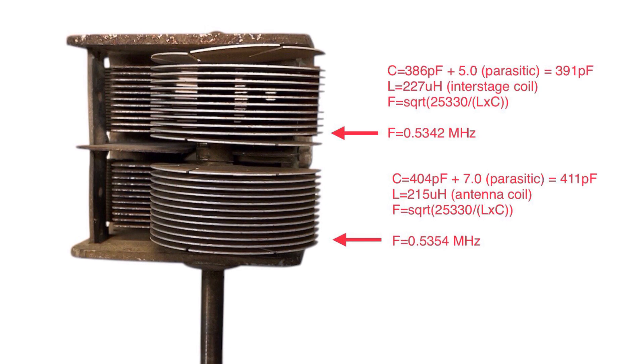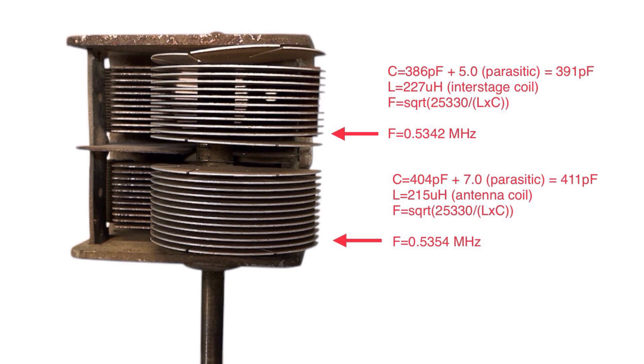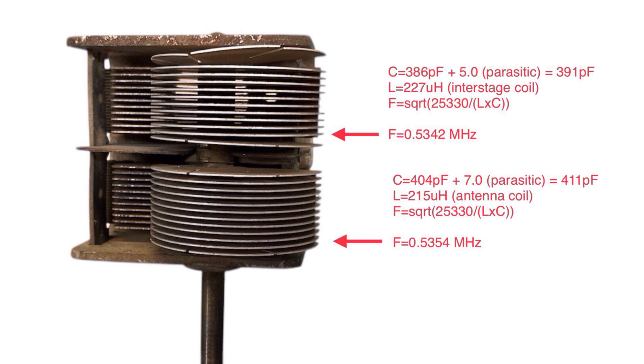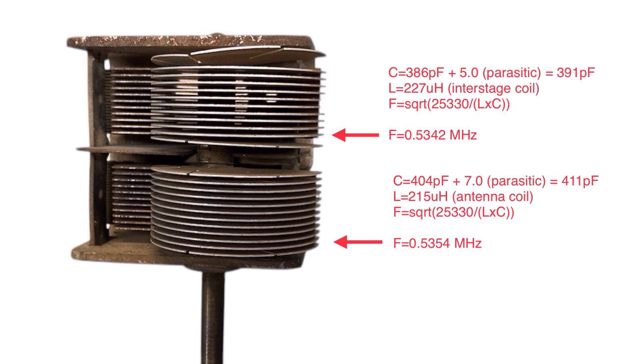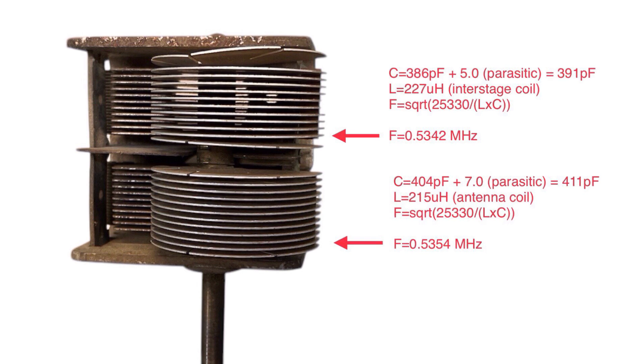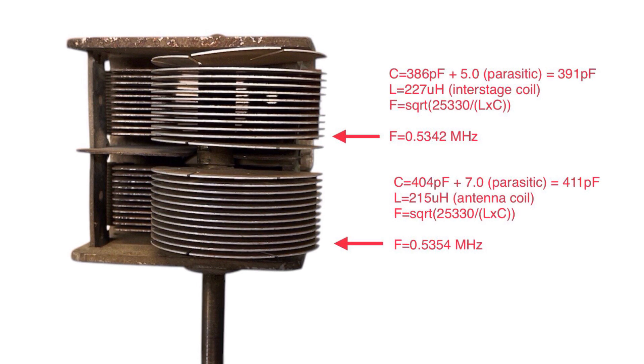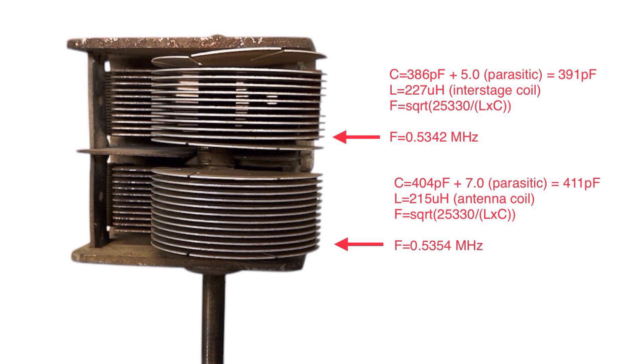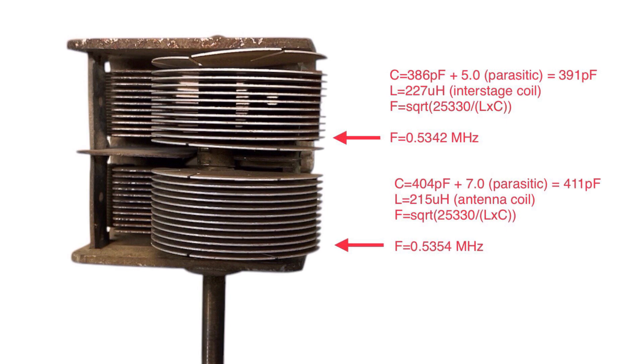Again, doing some math and looking at the alignment of the receiver as found, you can see the low end of the bands are pretty close the way the unit is aligned. So that explains why those plates are bent.